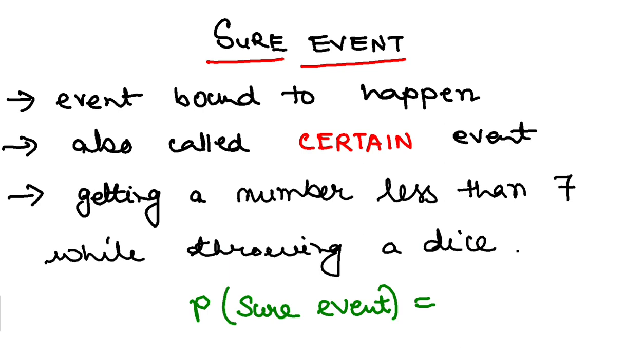Something which is going to happen, right? For example, getting a number less than 7 while throwing a dice. If you throw a dice, the possible outcomes are 1, 2, 3, 4, 5 and 6. All these numbers are less than 7, right? So this is a classic example of a sure event.